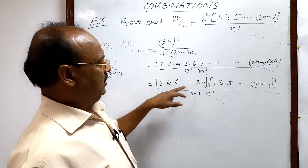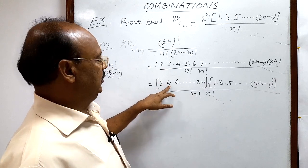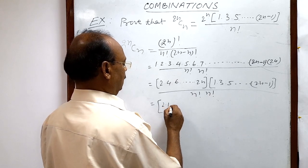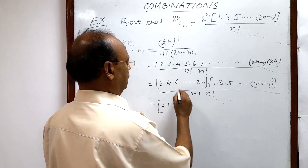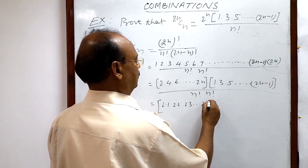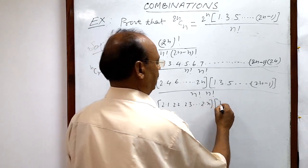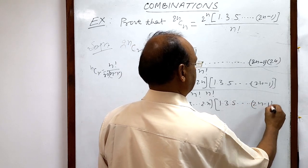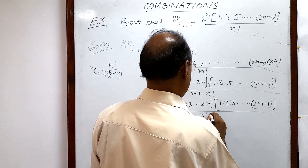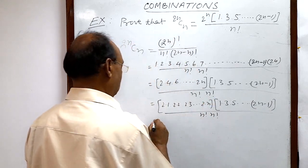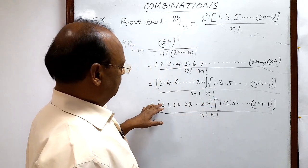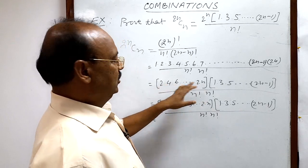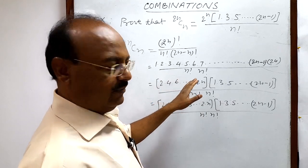Now in this even-number bracket, you can see: 2 is 2 into 1, 4 is 2 into 2, 6 is 2 into 3, and so on up to 2 into n. So we have 2 as a factor in each of 2, 4, 6, up to 2n. How many factors of 2 are available here?